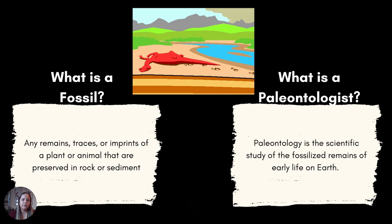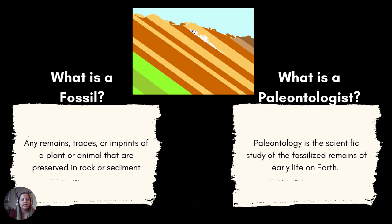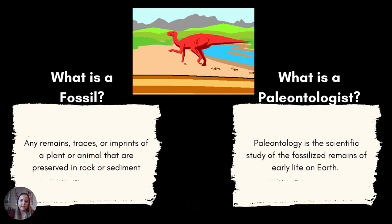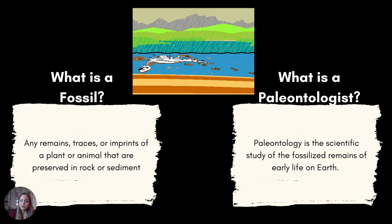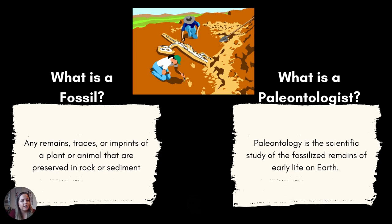A fossil is any remain or trace or imprint of past life, and these must be preserved in some sort of rock or sediment. Most of the time these are found in sedimentary rocks only, because metamorphic rocks and igneous rocks get buried to depths at which the fossil would not survive. With igneous rocks, they fully melt — they come from magma, so you would never see bones inside what used to be molten lava or magma.